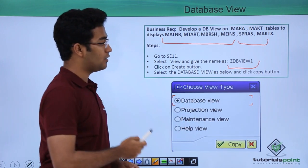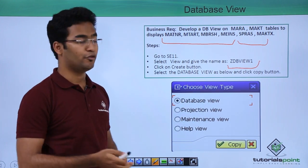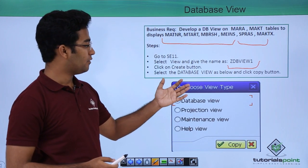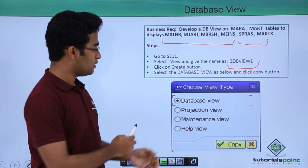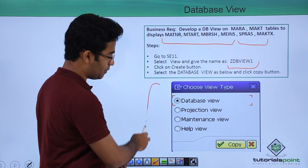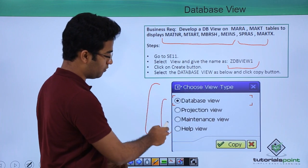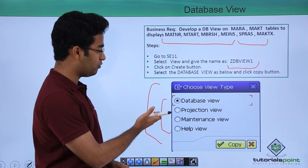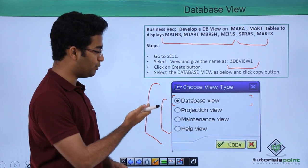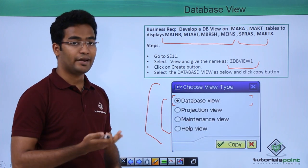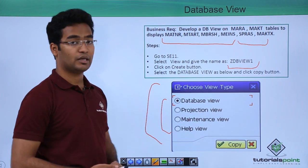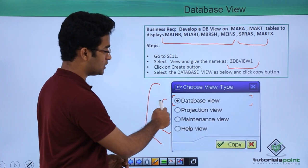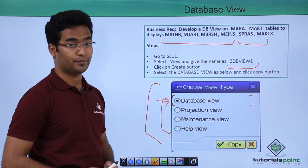For this we have to go to SE11, that is ABAP dictionary, and select the radio button view and give a name. Suppose we give the name ZDB_view_1 and then click on create. We can see a popup with the values: database view, projection view, maintenance view, and help view. In this case we are making a database view, so we select database view and click on copy.